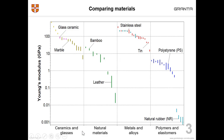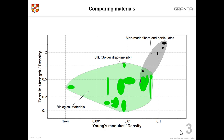You can see here ceramics and glasses, natural materials, metals and alloys, polymers and elastomers. You can also compare different types of materials. By using a custom subset, you can just highlight the materials that you're interested in. Here we have a comparison between biological materials, including spider silk, and man-made fibres.